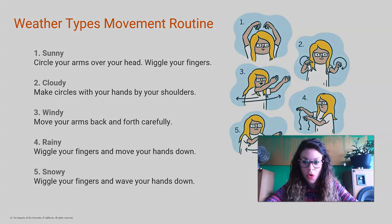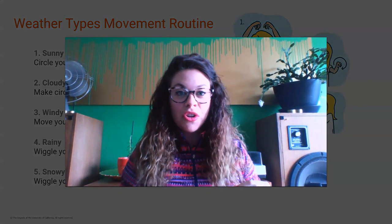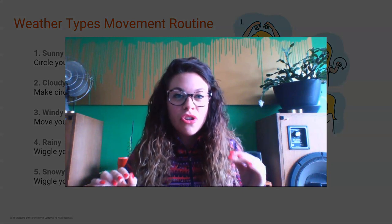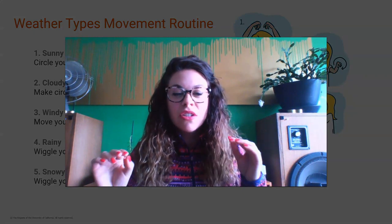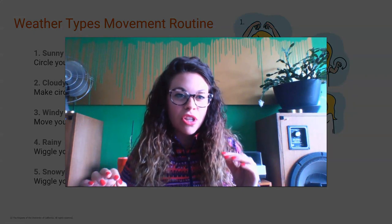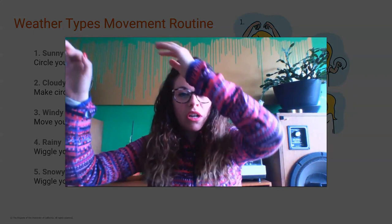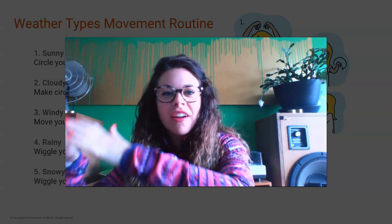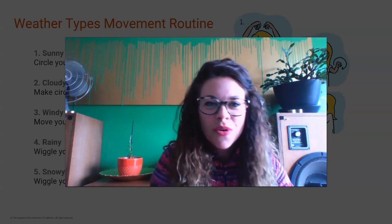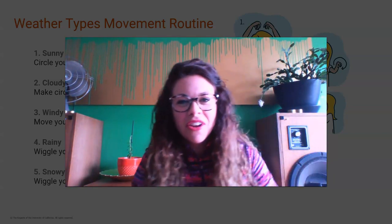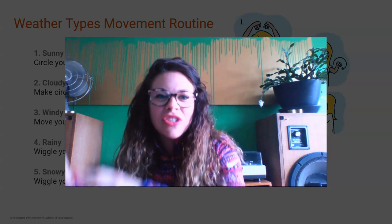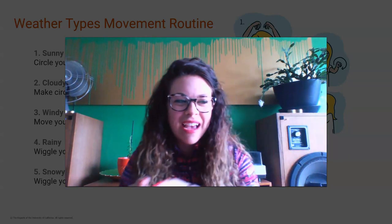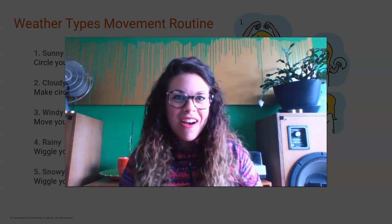This is the last type — it's snowy weather. We're going to show the snow falling out of the sky, but snow falls a lot softer and slower than rain. So we're going to go — snowy weather. Show me that snowy weather falling down from the sky.